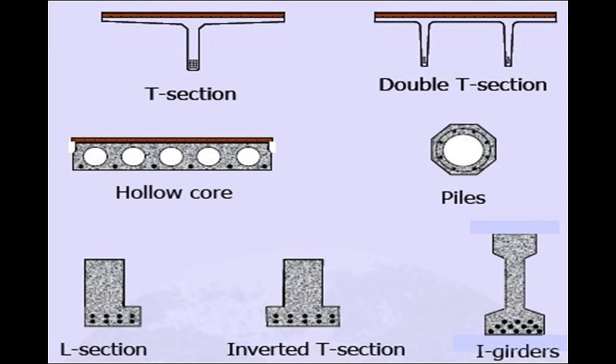These are different cross sections that can be used in a pre-stressed concrete member. You can have a T section, double T sections; you can use pre-stressed concrete in piles, hollow core sections, L sections, inverted T sections, and I girders.